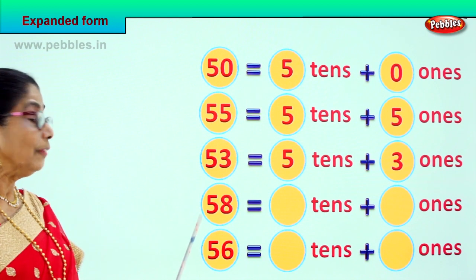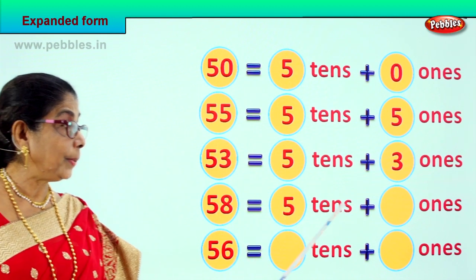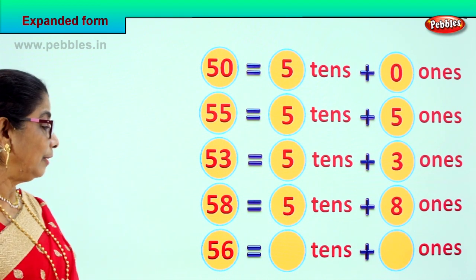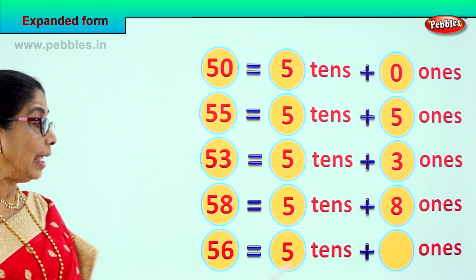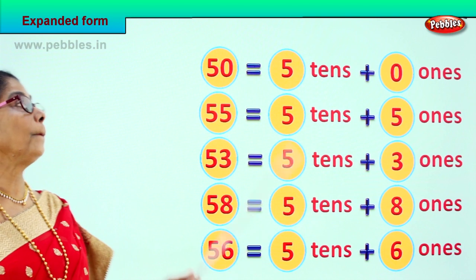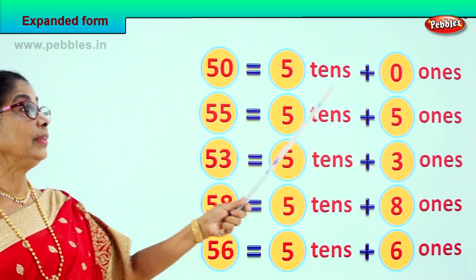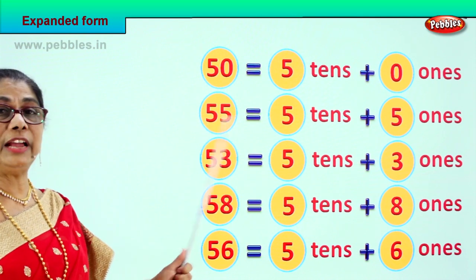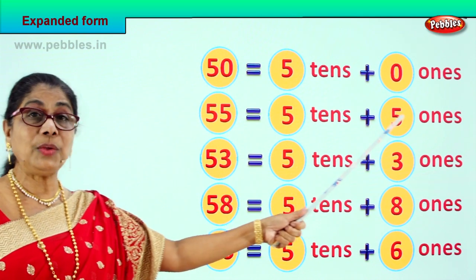58 is equal to 5 tens plus 8 ones. And 56 is equal to 5 tens plus 6 ones. Let's read it again together. 50 is equal to 5 tens plus 0 ones. 55 is equal to 5 tens plus 5 ones.